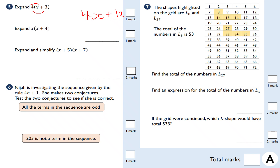Expand x lots of (x + 4). A common misconception: x times x is x squared, not 2x — x plus x is 2x, but x multiplied by x is x squared. So x times x equals x squared, and x times positive 4 is positive 4x, giving x squared plus 4x.